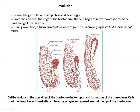Then we have involution. Involution involves rolling — cells are going to be rolling. From one end, near the edge of the blastoderm, cells begin to move inward to form the inner lining of the blastoderm.